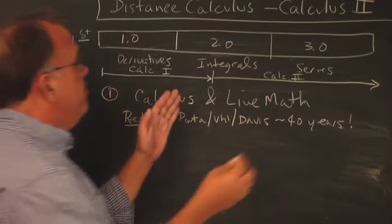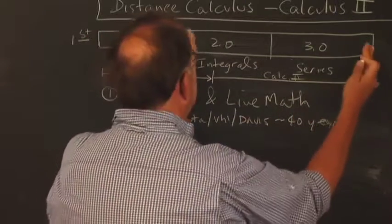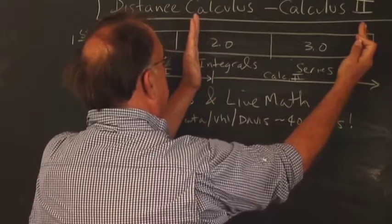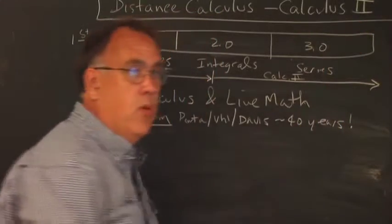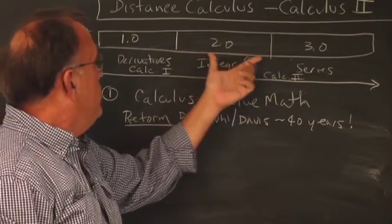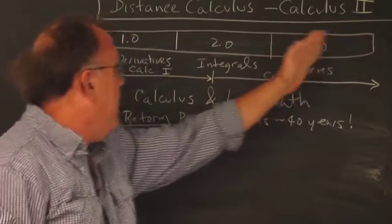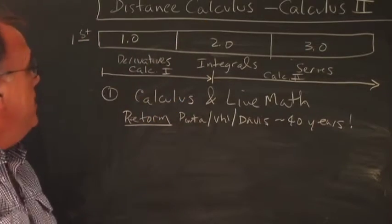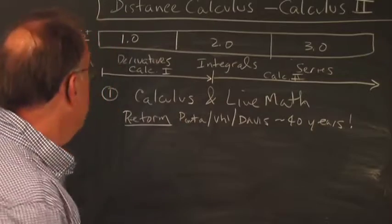So part of the reason why Calc 2 is longer is that it is not from the halfway point, but it's actually a little bit more than halfway. It's 2 thirds and 3, so it's like 5 thirds across here, whereas this is 4 thirds. That's one of the reasons why Calculus 2 is much longer.